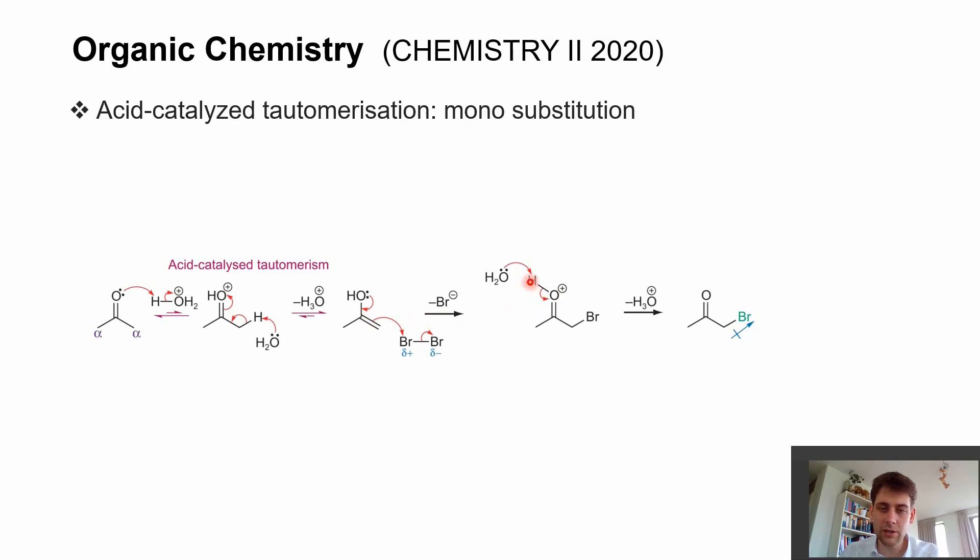This gets deprotonated, and we end up with this alpha-bromocarbonyl component. This is a very nice way to selectively make this monosubstituted product. Why is that selective? Because our bromine atom pulls on the electron density at our alpha carbon atom, and with that, the formation of this enol is way less favored. That's why we stop at this monosubstituted product.